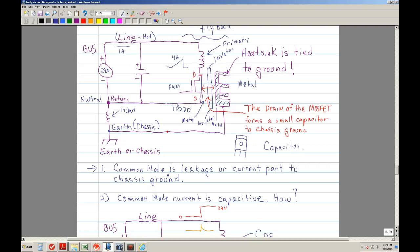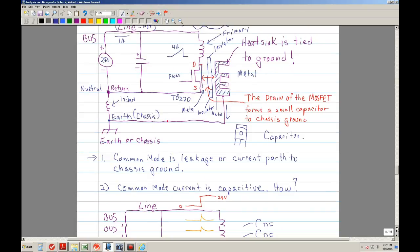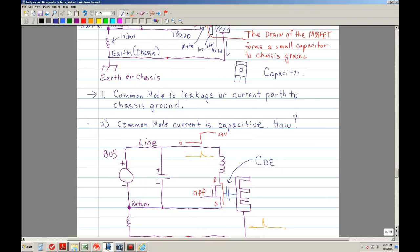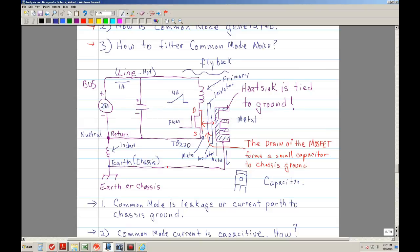Which brings me to the next definition of sorts. And that common mode, its leakage, or its current, that's path is to chassis ground. So in other words, it's some kind of current, this is the chassis, that is flowing to chassis. Now, the current can be flowing from the return to chassis, or it could be from the line to chassis. So by definition, if you have common mode, then you actually have capacitive current. So a common mode current is actually capacitive. And how? I kind of explained it. And that it forms a capacitor.